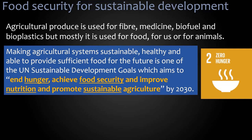Making these agricultural systems sustainable, healthy, and able to provide sufficient food for the future is one of the United Nations Sustainable Development Goals, which aims to end hunger, achieve food security, and improve nutrition and promote sustainable agriculture — all by 2030, so in less than ten years' time.